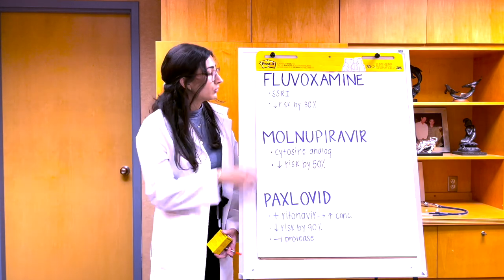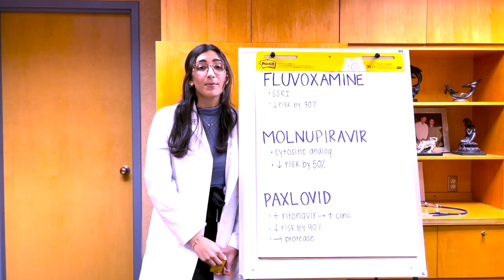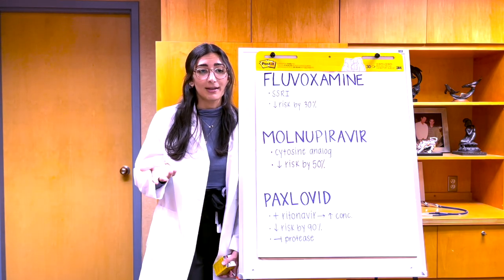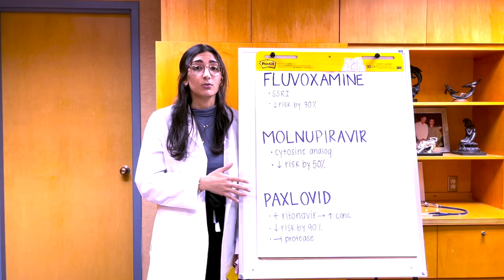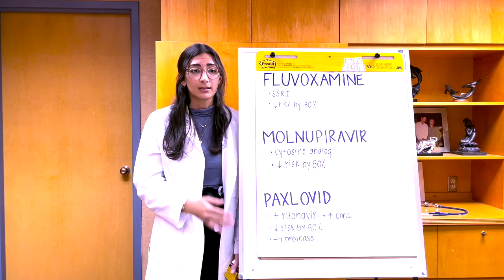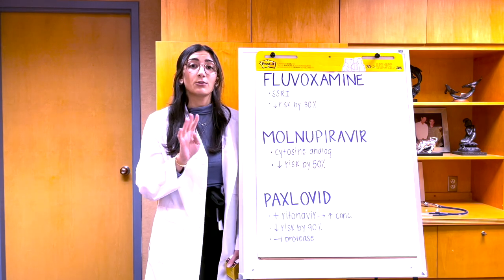On the other hand, these three new treatments, fluvoxamine, molnupiravir, and paxlovid, have the possibility to change the course of the pandemic. As we're facing a global disease, it's vital to consider how these drugs will be distributed to low-income countries around the world. Fluvoxamine, an antidepressant, is already available and it's only $4 a course.